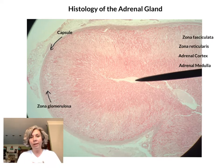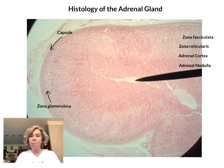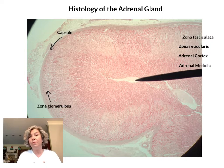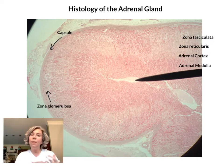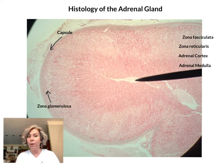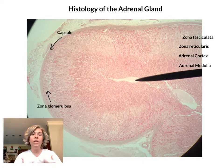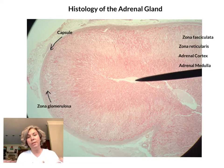Aldosterone is a mineral corticoid hormone whose main target organ is the kidneys. It causes the kidneys to absorb more sodium back into the bloodstream, and wherever sodium goes, water will follow. So increasing sodium means we're also increasing water. In a roundabout way, aldosterone can also play a role in regulating blood pressure, because an increase in sodium increases water, which increases blood volume, so pressure will rise as a result.